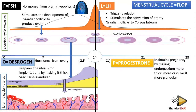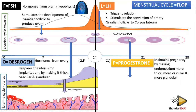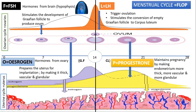Luteinizing hormone then stimulates the conversion of this empty Graafian follicle to corpus luteum. Once its function is done, luteinizing hormone decreases. The corpus luteum then starts to produce progesterone. Progesterone maintains pregnancy by making the endometrium wall more thicker, more vesicular, and more granular — increasing blood vessels and glands further.